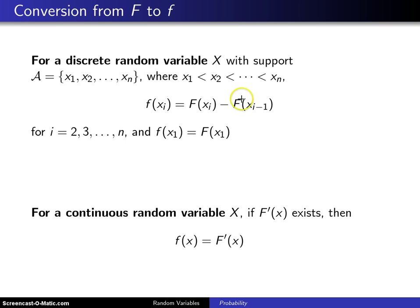This top portion considers discrete random variables and this bottom portion considers continuous random variables. I'm going to start with the continuous case because I think it's the easier of the two.